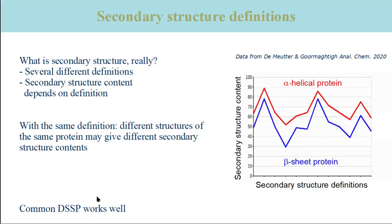Even using the same definition may yield different secondary structure contents for different experimental structures of the same protein. The figure shows the secondary structure content of two different proteins obtained by 12 different definitions for secondary structure. The red curve shows the alpha-helical content of a helical protein, and the blue curve shows the beta-sheet content of a protein rich in beta-sheet. The beta-sheet content varies by more than a factor of two between different definitions — from around 30% to close to 80%. It was found that secondary structures assigned by the common DSSP method can be well predicted by infrared spectroscopy.